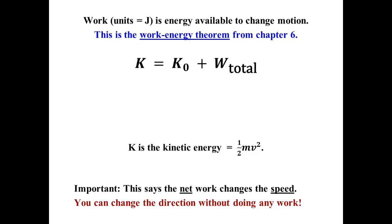The kinetic energy is 1/2 mv squared. That v squared means that the direction information has been lost. Only the magnitude of the velocity, the speed, shows up in the kinetic energy. That means if you change direction, you don't necessarily have to do any work to make that happen.